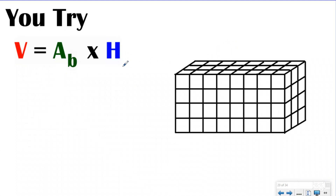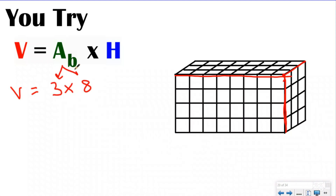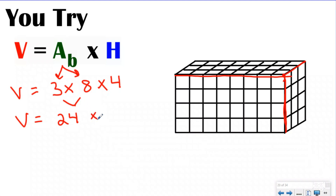Let's do a you-try problem. You can use this formula or break it apart into length times width — whatever you're comfortable with. Push pause, then push play when you're ready to check your work. Let's solve it: I'll use the length and width to find the area of the base. The area of the base is three times eight — that's length times width — which equals 24. Then I had four layers of that. So 24 times four gives me a volume of 96 cubic units.